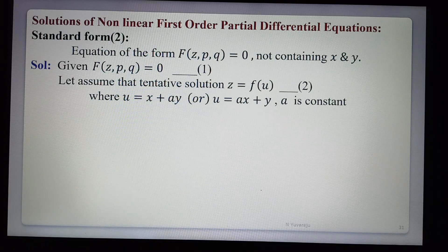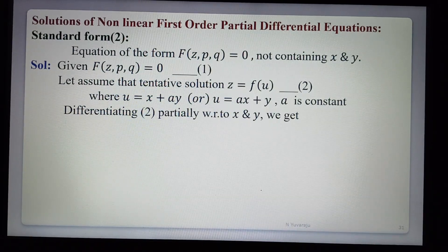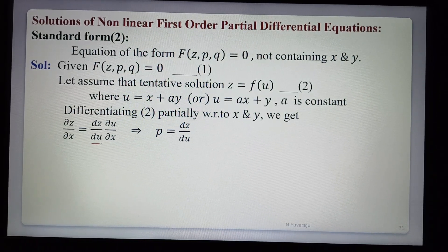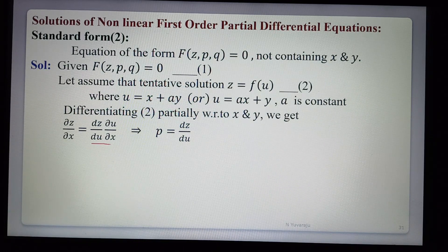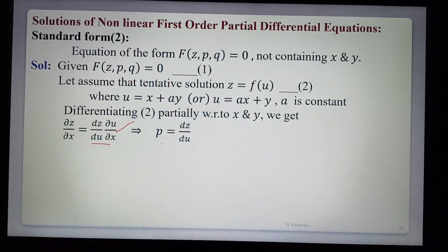First we find p and q, then eliminate them. Here p = ∂z/∂x and q = ∂z/∂y. Differentiating equation 2 partially with respect to x: since z is a function of the single variable u, we get dz/du. Then since u is a function of x and y, we apply the chain rule: ∂z/∂x = dz/du · ∂u/∂x.